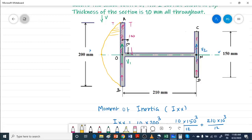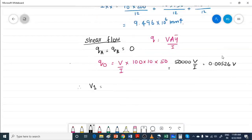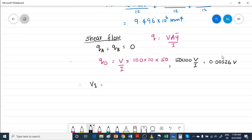This is the shear flow distribution. At this point O, it is 50,000 V divided by I. When V1 is equal to that shear flow, it's 100 V by I. This is where the shear flow is 20,000 V by I.